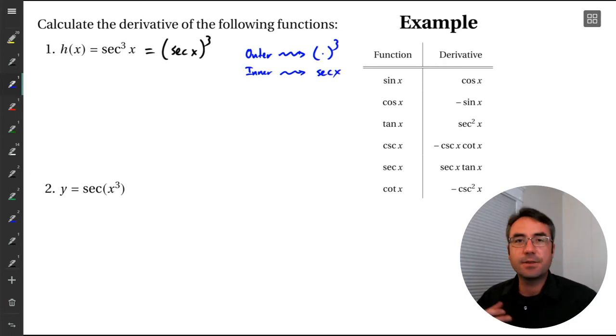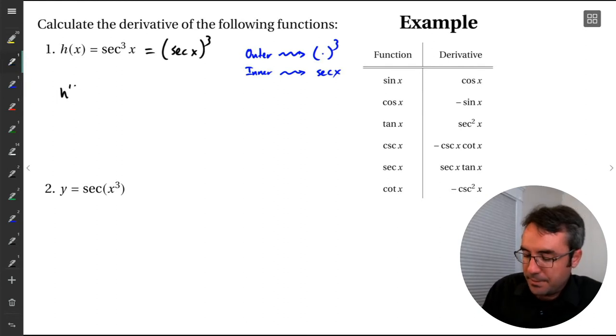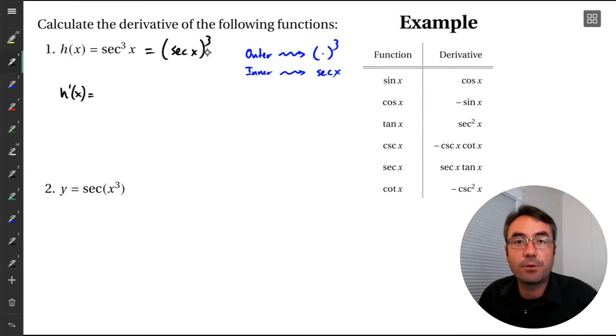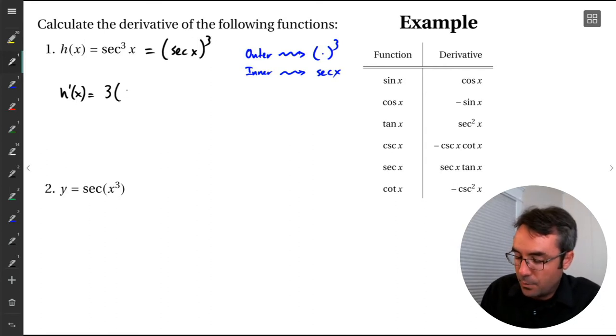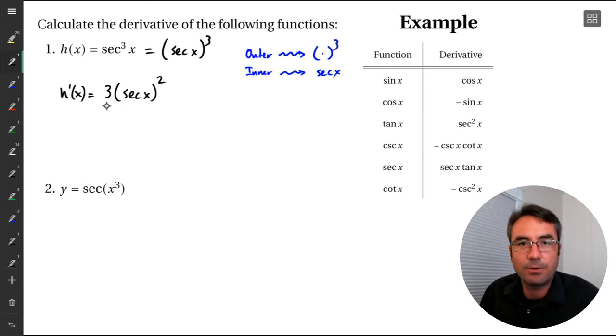All right, so how does calculating the derivative look here? Well, we're going to calculate h prime. And it's a power function. So we use the general power rule. So what does that say? It says take this 3, bring it down, put it in front. We keep everything inside the parentheses exactly the same. So the secant x exactly the same. Subtract 1 from the exponents. So we go from 3 down to 2. So that feels like power rule.